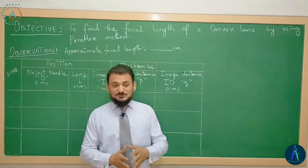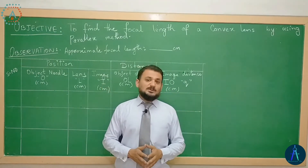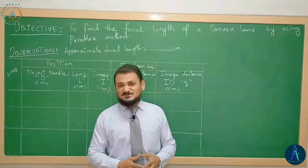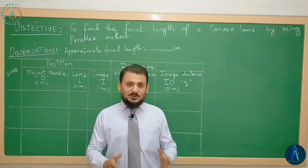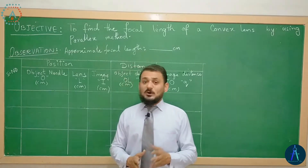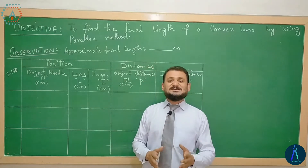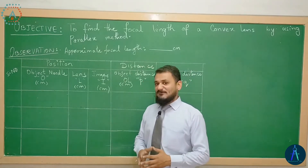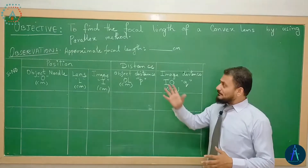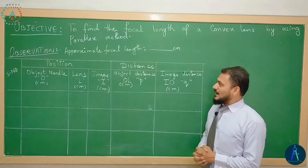Focal length find out کرنے کے لئے ہم lens formula use کریں گے calculation کے اندر, that is 1 over f equals to 1 over p plus 1 over q, where p and q are the object distance and image distance, while f is the focal length.